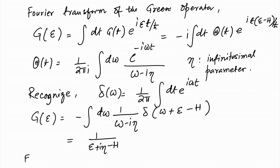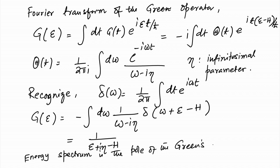The energy spectrum is the pole of the Green's function. This is the basic introduction to Green's functions. Now before we go further with the discussion of Green's functions, we note that a Green's function will be written in a representation called the interaction representation. There are three kinds of representations used in quantum mechanics: the Schrödinger representation, the Heisenberg representation, and the interaction representation.